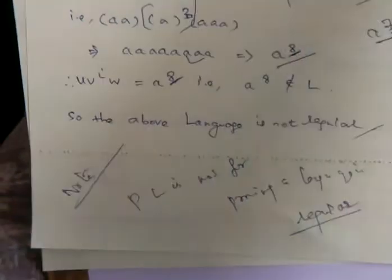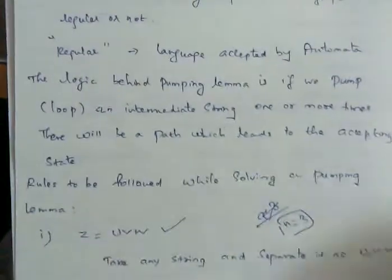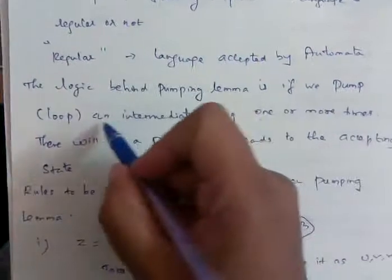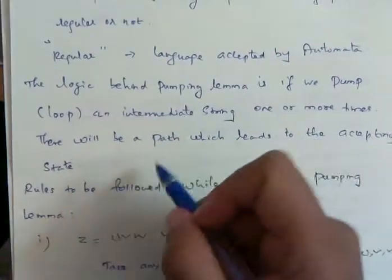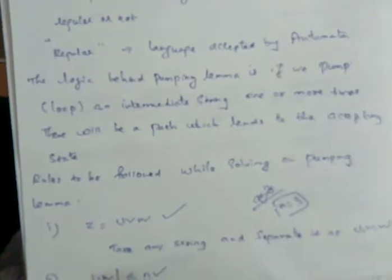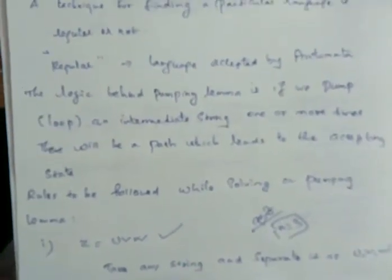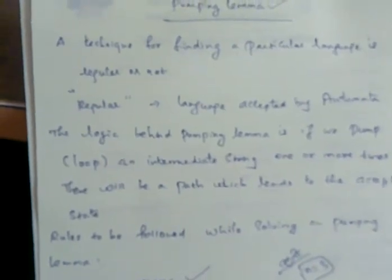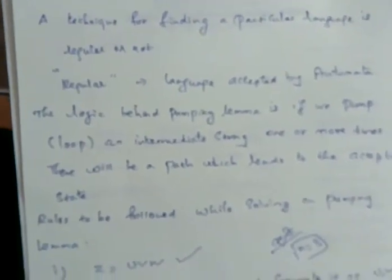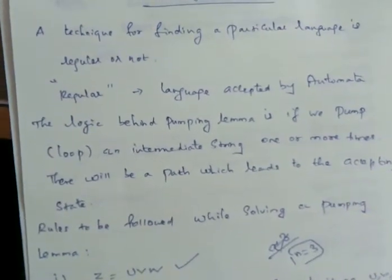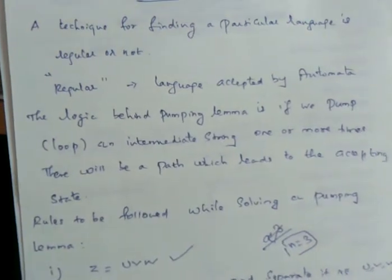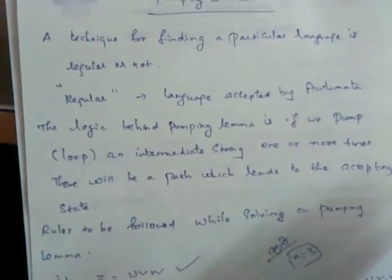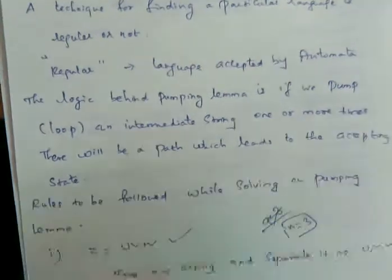The important point to remember is: if we loop an intermediate string one or more times, that will lead to the accepting state. The aim is that if we pump the intermediate string many times, it will reach a string which is also in the language, and through that string we will go to the accepting state.